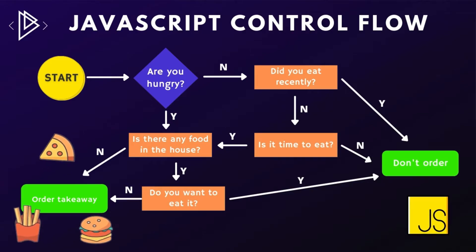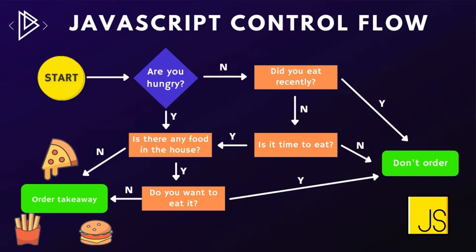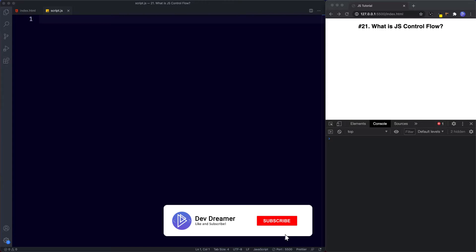Let's try a different path. Are you hungry? Yes. Is there any food in the house? Yes. Do you want to eat it? No. So in that case, order takeaway. Control flow is all about the order in which our code is run. We're able to control the flow of our code and either execute or loop over certain sections based upon whether a given condition is true or false.